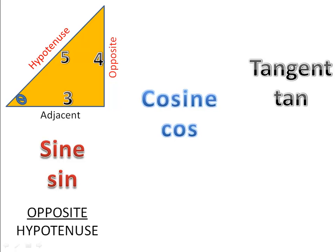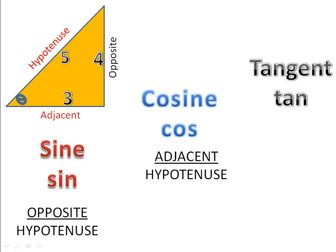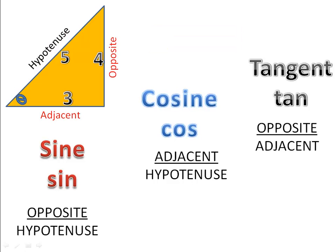The sine of theta is the opposite over the hypotenuse. In this case, the opposite is four and the hypotenuse is five, so the sine of theta is the ratio four to five. Cosine is simply the adjacent over the hypotenuse, so the cosine of theta is three over five — three feet to five feet. Finally, the tangent is the opposite over the adjacent. We compare those numbers: four over three, so the tangent of theta is four to three, meaning the opposite side is four feet and the adjacent side is three feet.